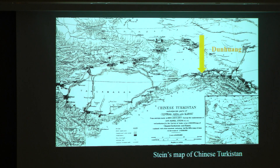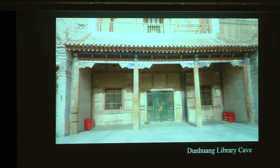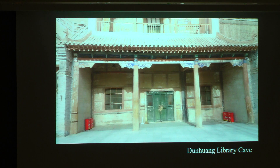Stein imagined Dunhuang as a frontier town wedged between Chinese Turkestan and China. He explored a number of the cave temples at the site, and in the famous Dunhuang Library Cave — Cave 17 — he discovered thousands and thousands of ancient manuscripts connected to various religions and written in many different languages and scripts. These had been preserved for almost 800 years, sealed up sometime in the 11th century, making it a very significant discovery for European scholarship.